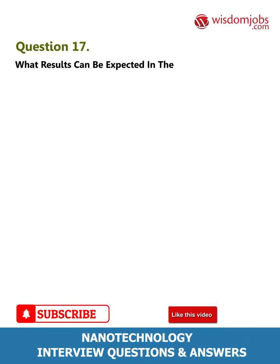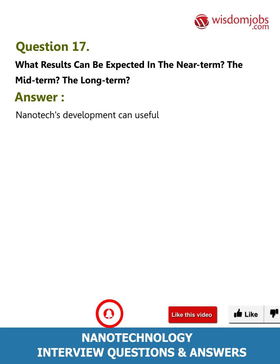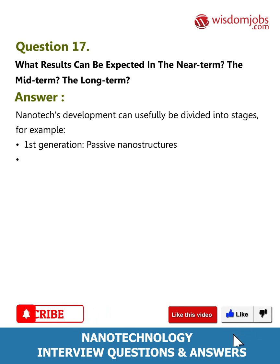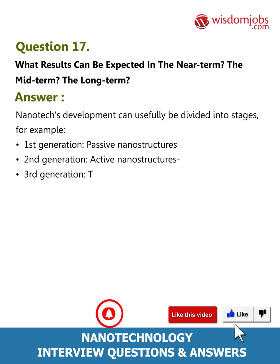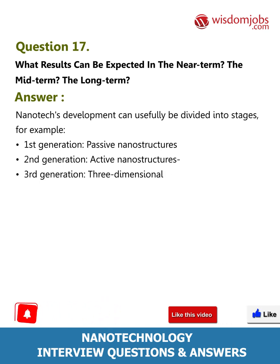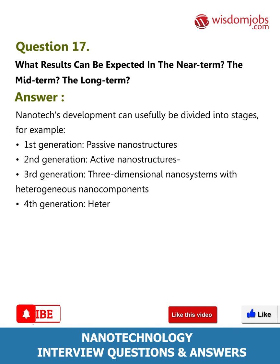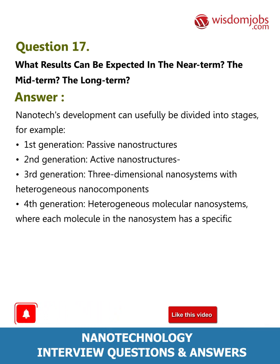Question 17: What results can be expected in the near term, mid term, and long term? Nanotech's development can usefully be divided into stages. For example: first generation — passive nanostructures; second generation — active nanostructures; third generation — three-dimensional nano systems with heterogeneous nano components; fourth generation — heterogeneous molecular nano systems where each molecule in the nano system has a specific structure and plays a different role.